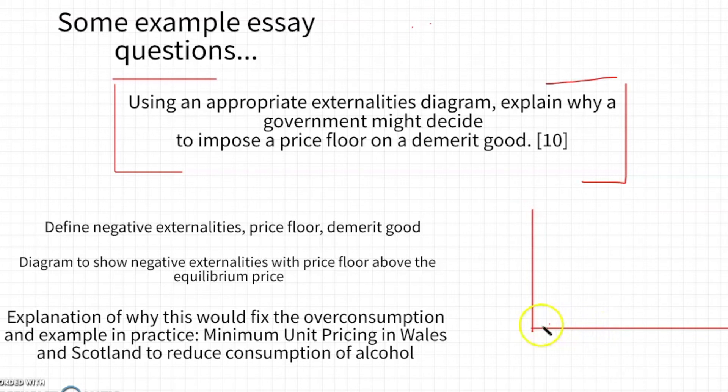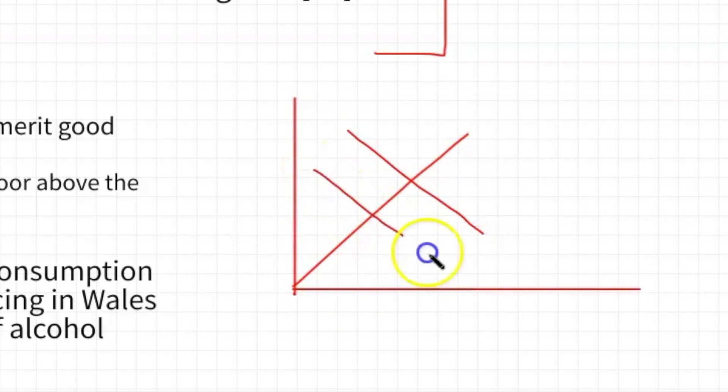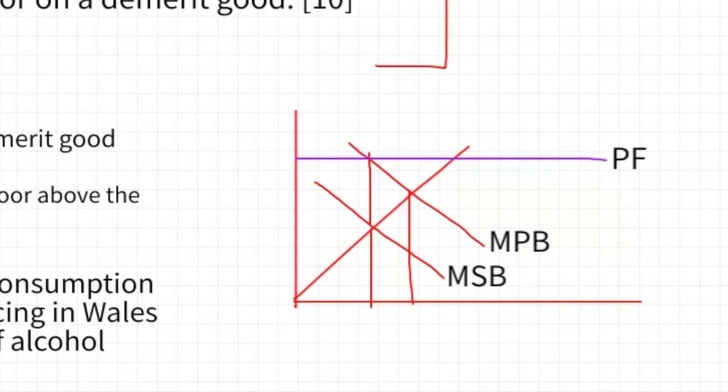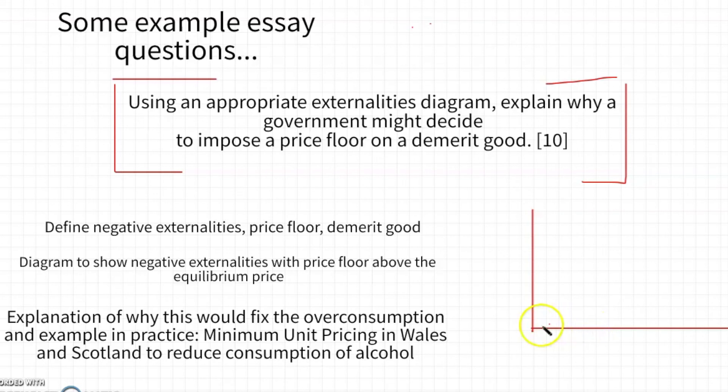The structure for a 10 marker is you first define the relevant terms. You define negative externalities as when the consumption or production of a good leads to spillover cost to third parties. You define a price floor as what I just said, a demerit good as a good that results in negative externalities. Then you draw the diagram to show negative externalities with the price floor above the equilibrium price. Just remember that the axes here for any externality diagram is always cost and benefit on the y-axis and quantity on the x-axis. Then the next step is to explain the diagram and to have an example. The example I have here is minimum unit pricing in Wales, where they actually implemented a price floor to raise the minimum price of alcohol and reduce the overconsumption.